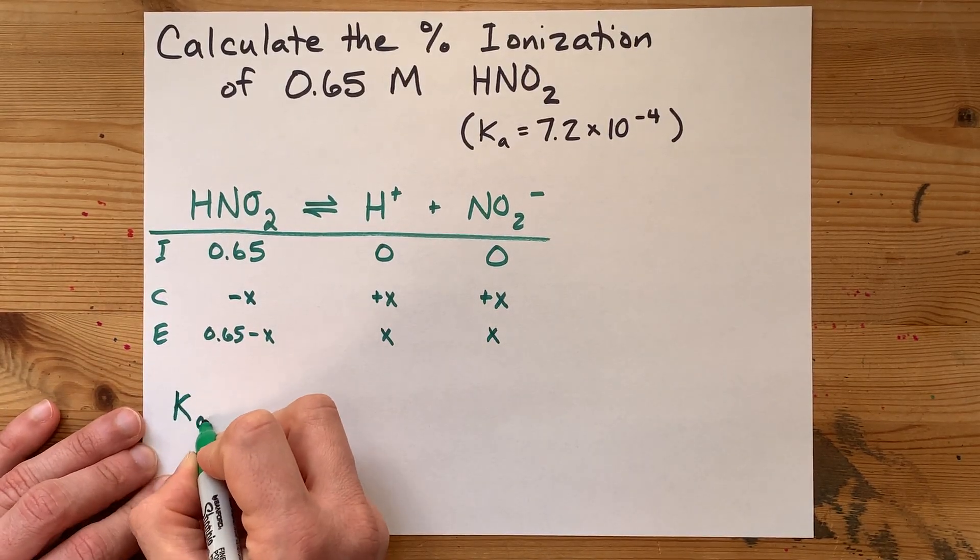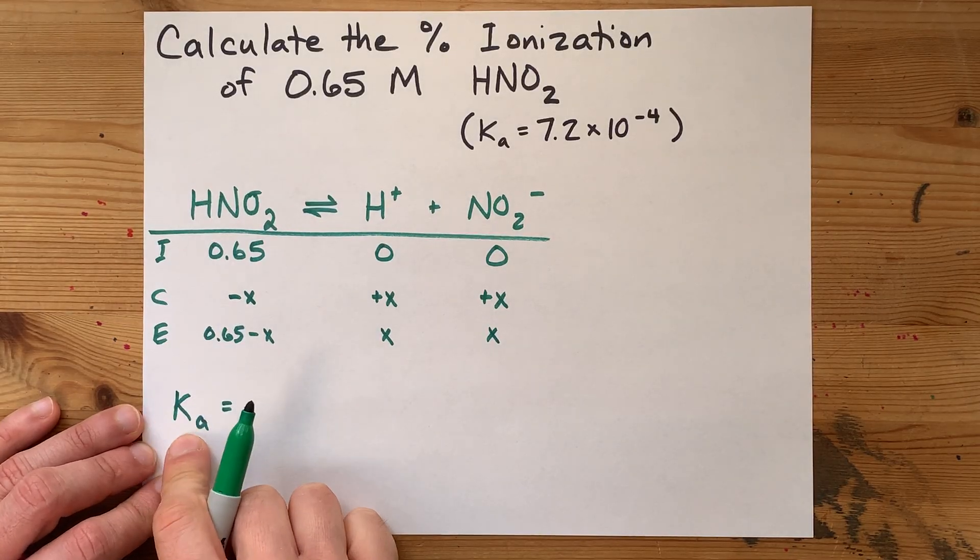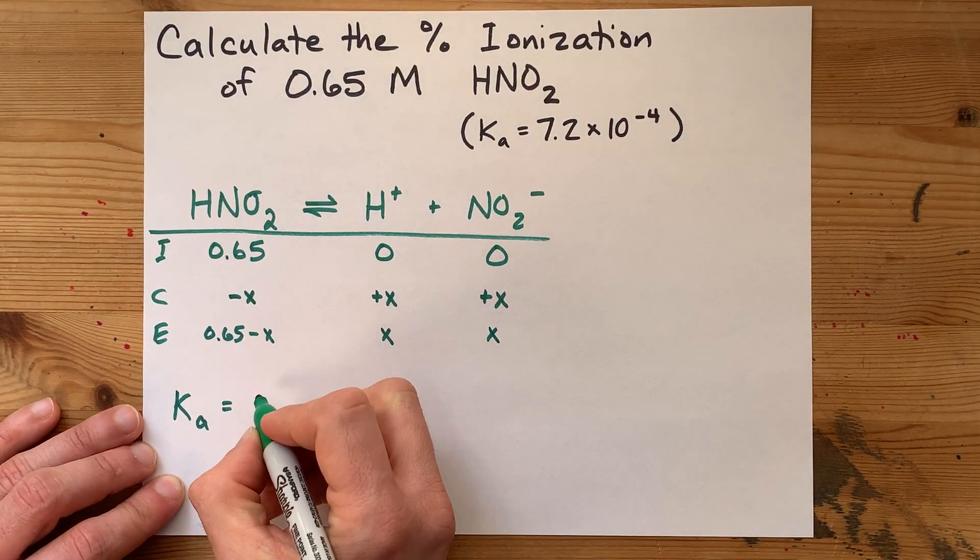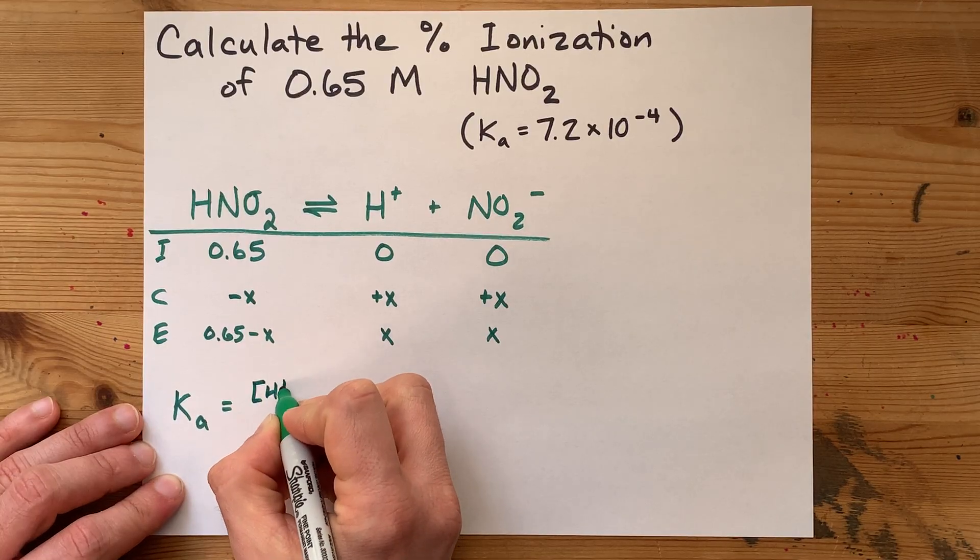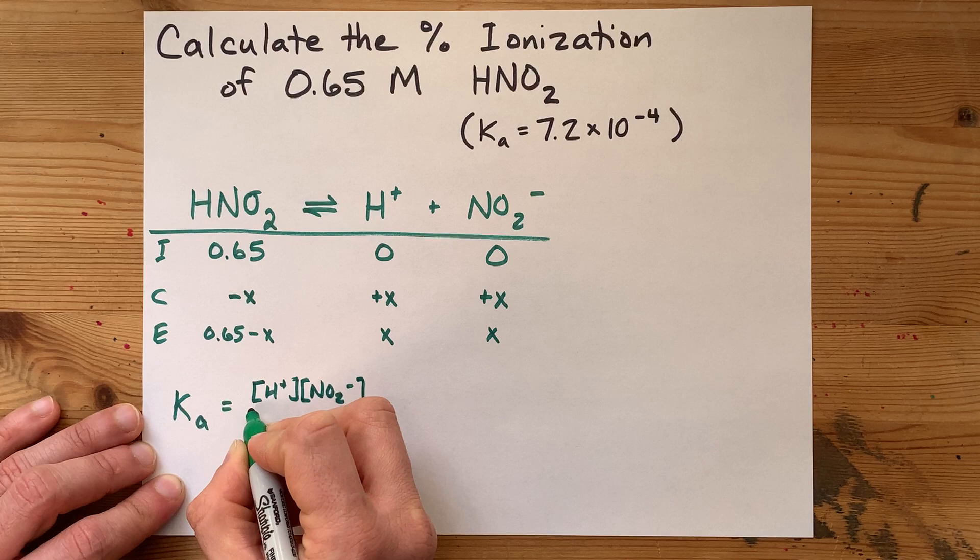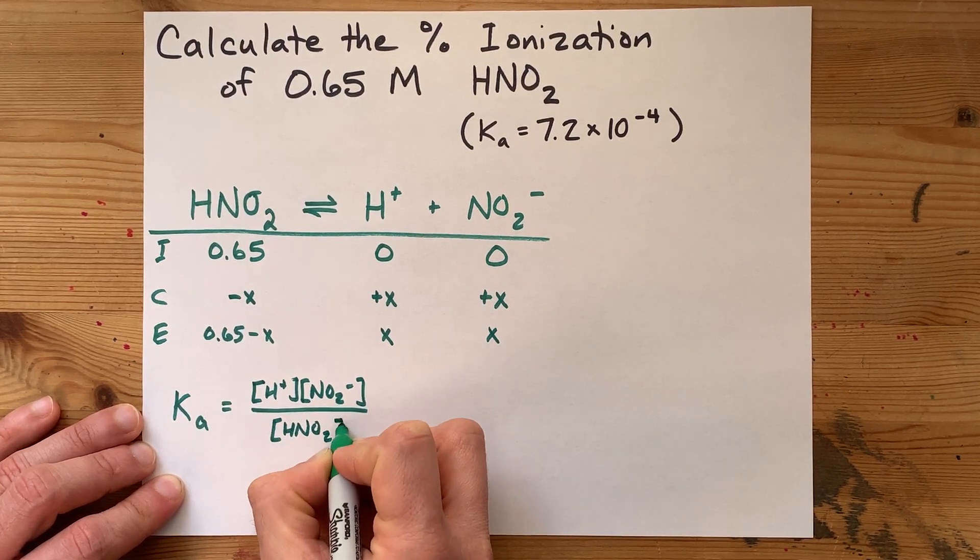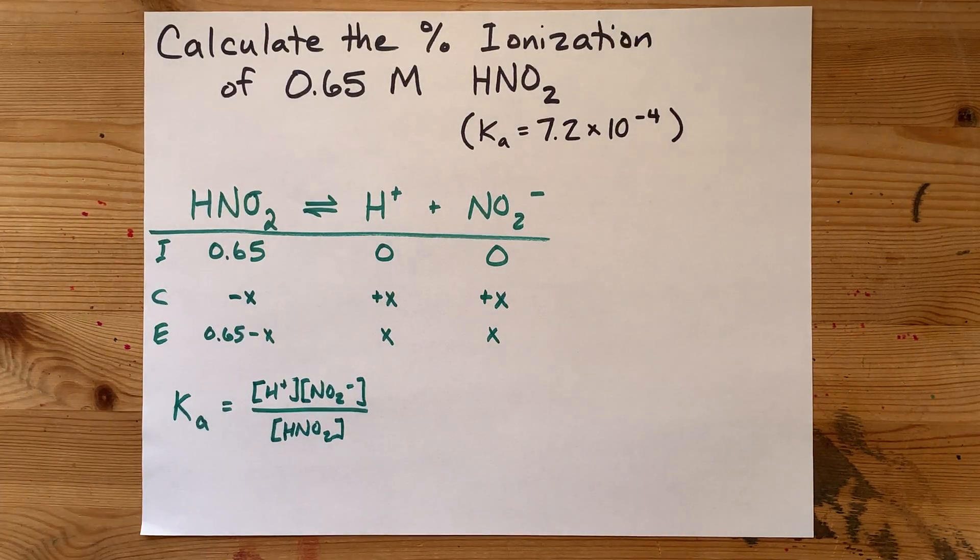The reason that's significant is we can create an equilibrium expression, KEQ equals products over reactants. And for us, it's the concentration of H plus times the concentration of NO2 minus divided by the equilibrium concentration of HNO2, which will be something less than 0.65.